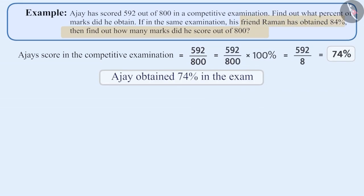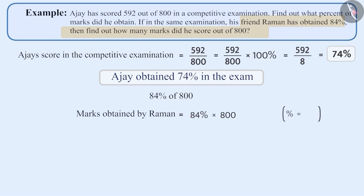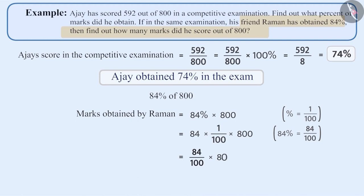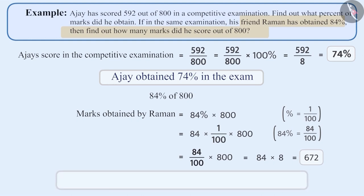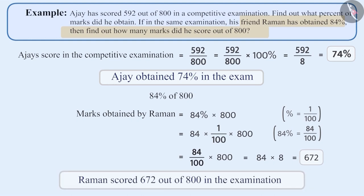Now let's find out how much Raman got. Since Raman obtained 84 percent out of 800 marks, marks obtained by Raman equals 84 percent into 800. Since percentage equals 1 by 100, we can write 84 percent as 84 by 100. So marks obtained by Raman equals 84 by 100 into 800, which equals 672. Therefore Raman has scored 672 marks out of 800 in the examination.